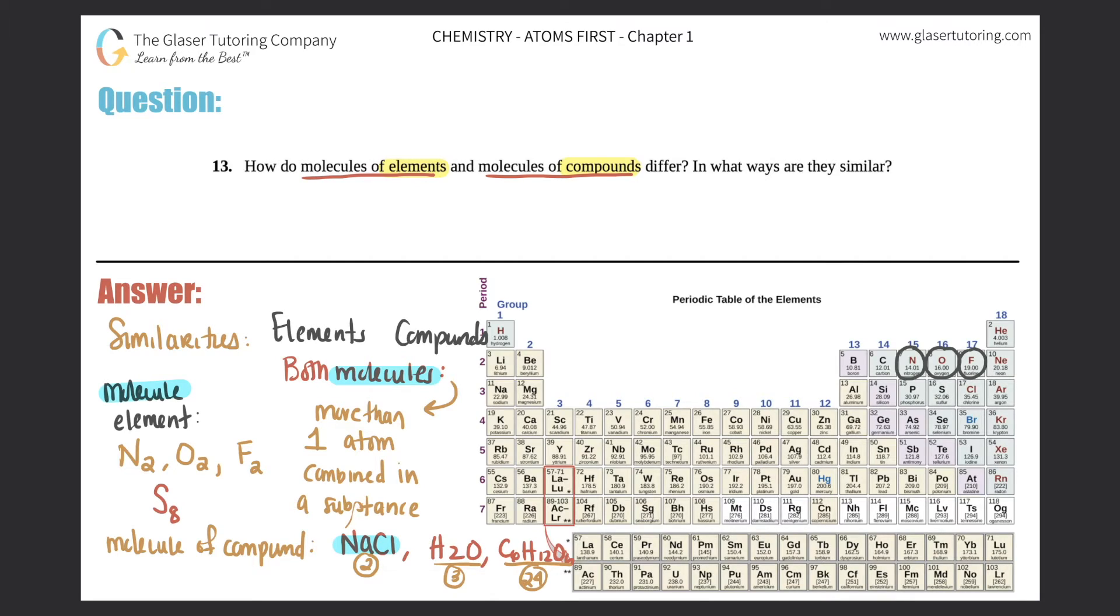So if we look at the molecule of an element—so the S8, the N2, the O2—versus the molecule of the compound—the NaCl, the H2O—what looks different here? Oh, in here for the elements, the atoms are the same. Versus for compounds, the atoms are different. And there you go with your differences.